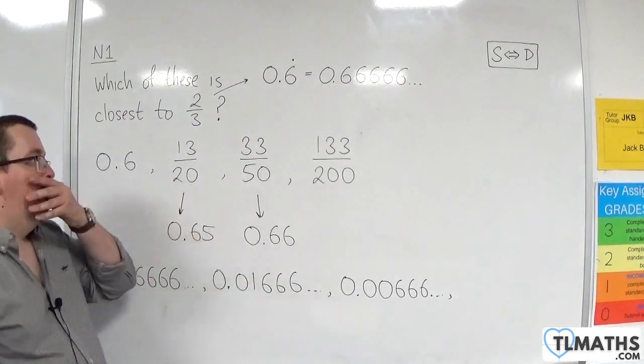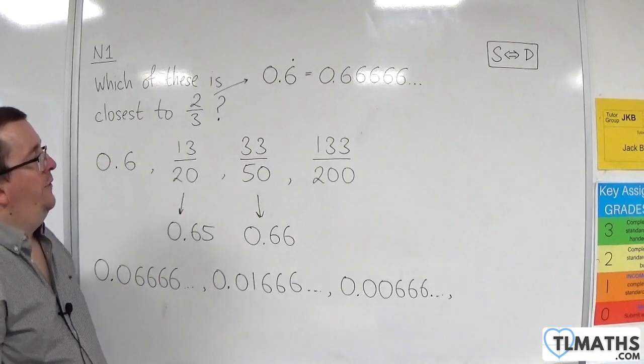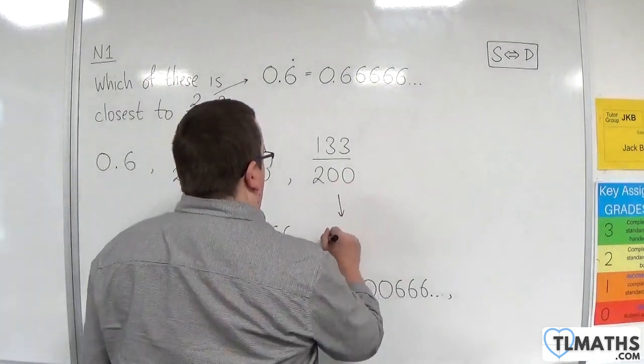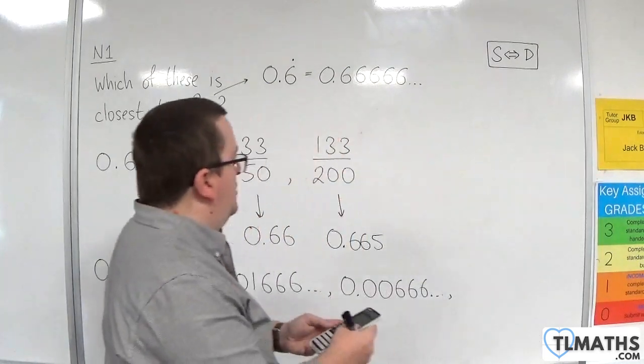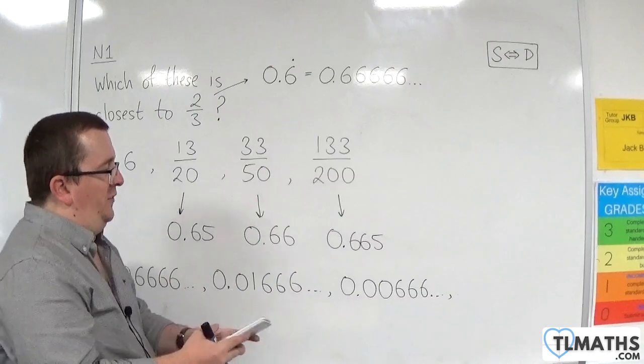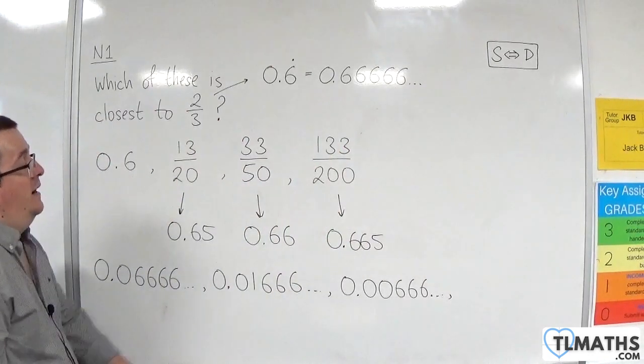So that would be 0.665, I believe. So 0.665. Just double-check that one on the calculator just to make sure I'm okay. 133 divided by 200. Press the SD button, yeah. 0.665. So, is that closer?